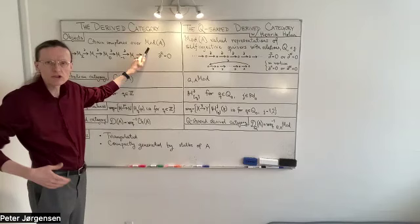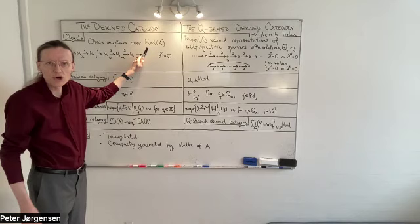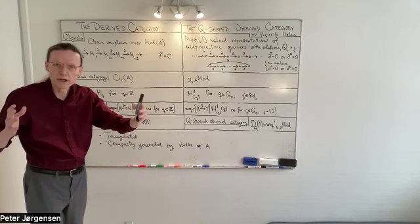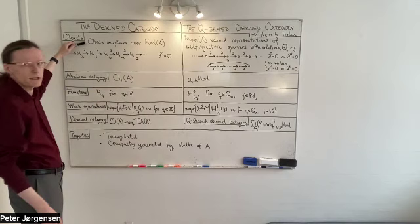There's no time for motivation, but the derived category is home to quite a lot of, well, quite a large proportion of homological algebra as known to man. So what do you do? You first consider chain complexes over mod A, and these chain complexes, they're diagrams that look like this.